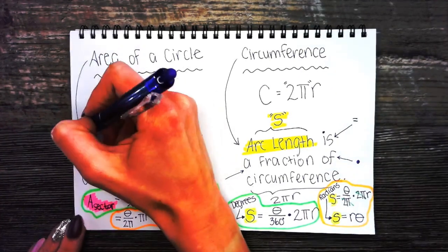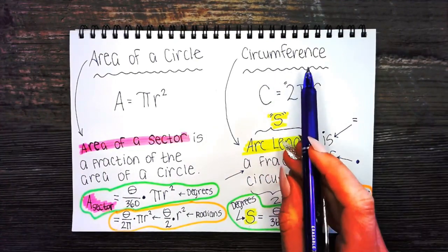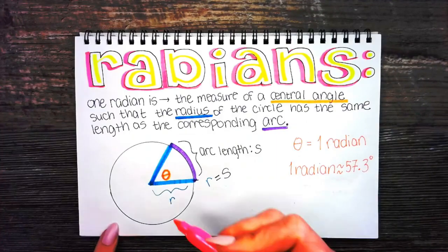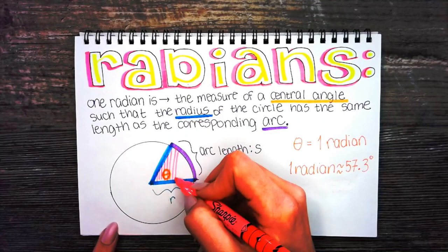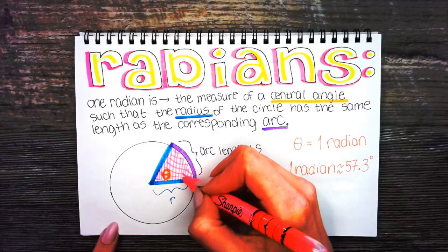The area of a circle can be looked at in smaller chunks and we can find area of a sector, sort of like the area of this pizza slice right there.